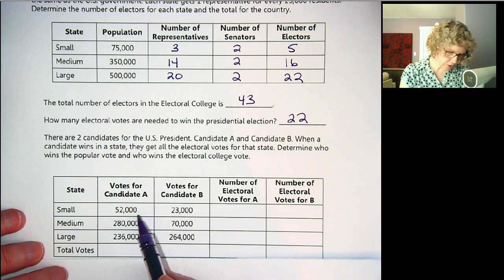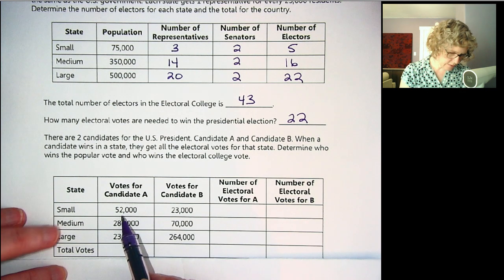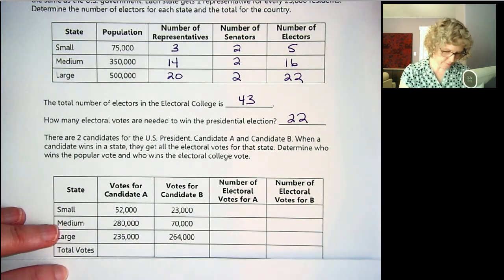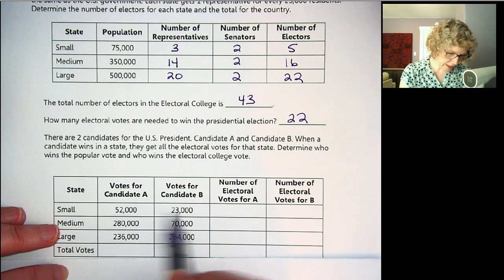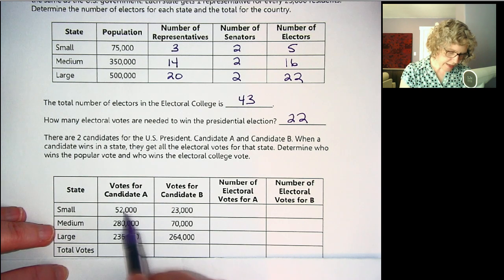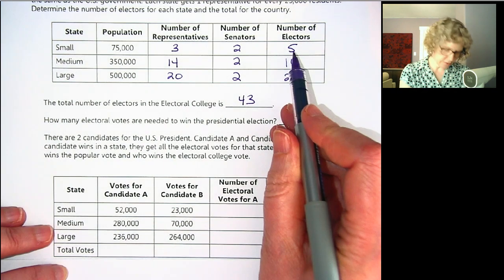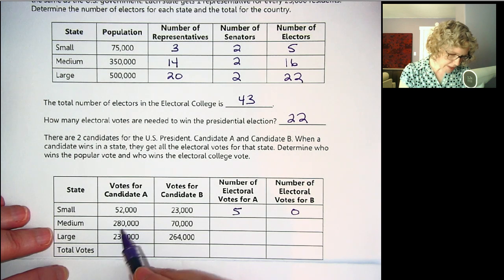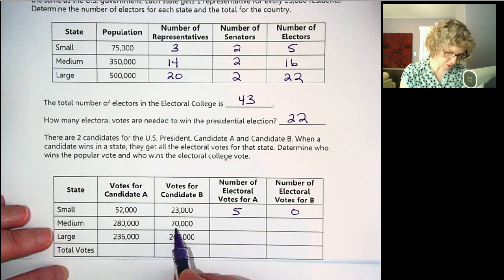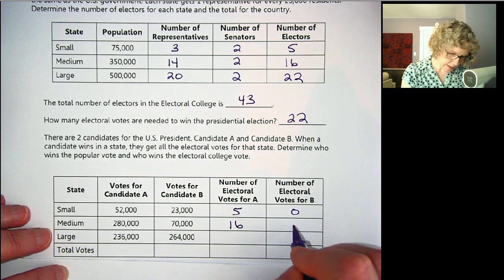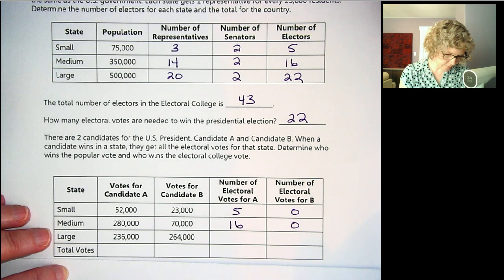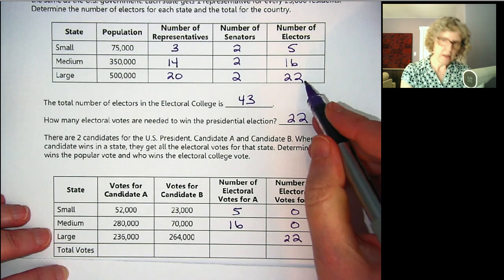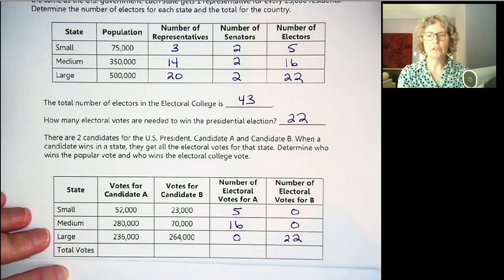In the small state, there are 75,000 votes — everybody voted, which is amazing. 52,000 voted for A, so Candidate A won the small state and gets all five electoral votes; B gets none. In the medium state, Candidate A got 280,000 votes, so they won that state and get 16 electoral votes; B gets none there either. In the large state, Candidate B won 264,000 to 236,000, so B gets all 22 electoral votes for that state, and A gets none.